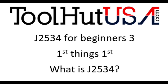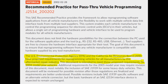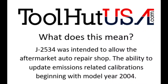Before we get carried away, let's go over a little history lesson of what J2534 is. J2534 was an EPA protocol, done in combination with CARB. It was intended for aftermarket shops to be able to do emissions-related calibration updates. Customers were complaining they had to take their cars to the dealer to get updated, and they didn't like that restriction. So they came up with J2534, intended for emissions-related calibrations starting with model year 2004.